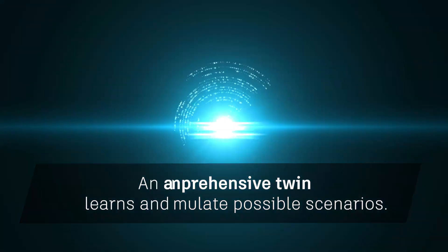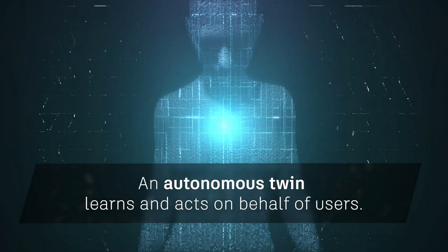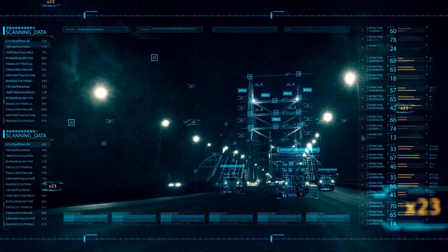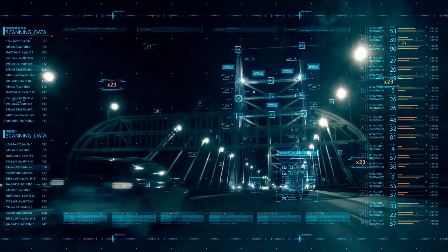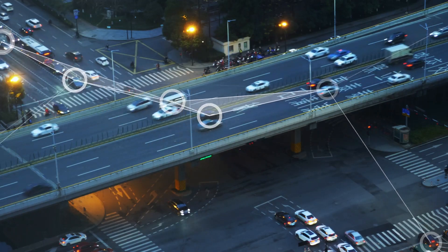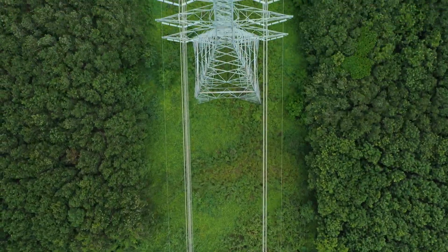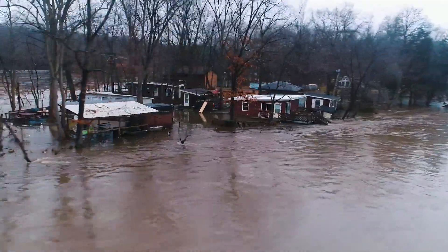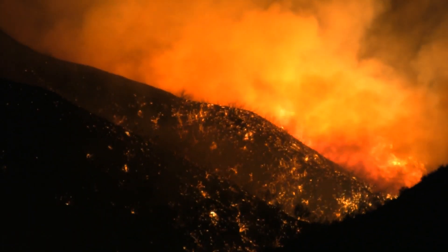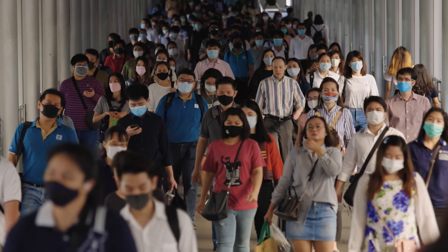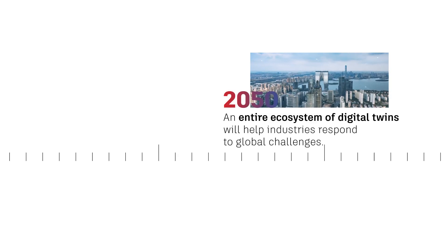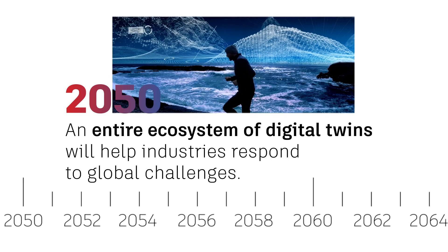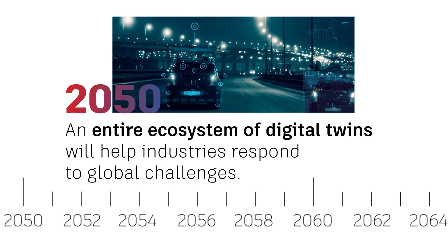In the future, twins will become autonomous, able to learn and act on behalf of users. Because digital twins can gather key information about things like population growth, natural resource supply levels, and historical data on environmental disasters, they can help build more resilient cities and infrastructures as the world changes. Eventually, an entire ecosystem of digital twins will help industries respond to global challenges with powerful simultaneous changes.